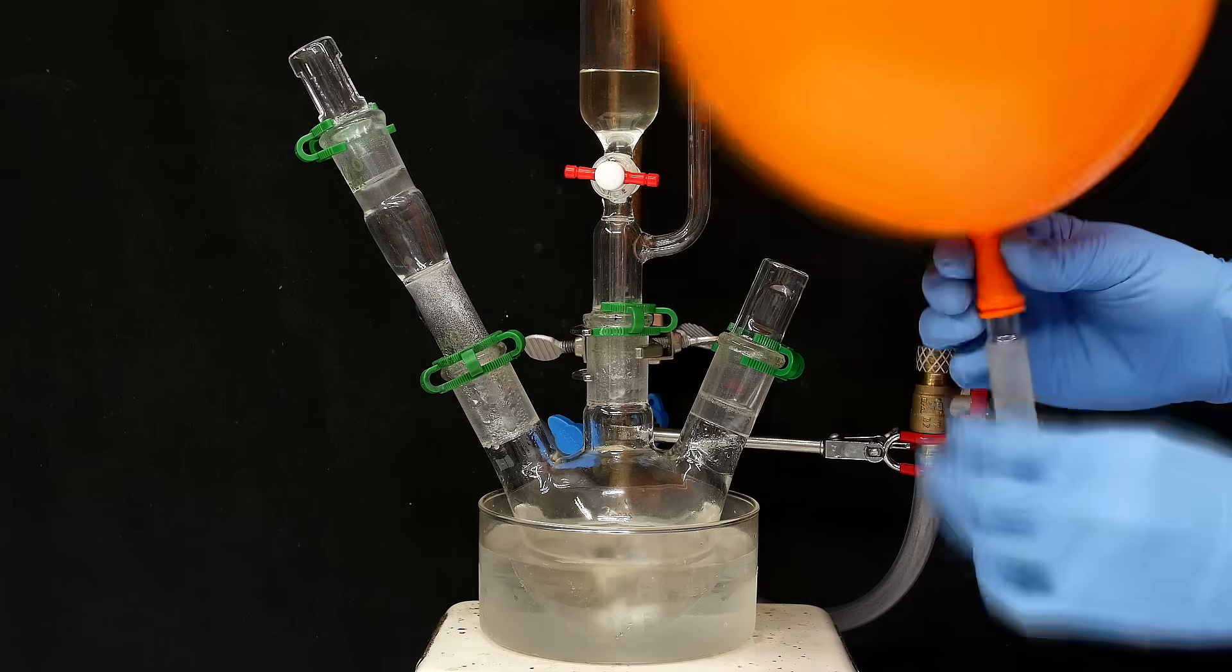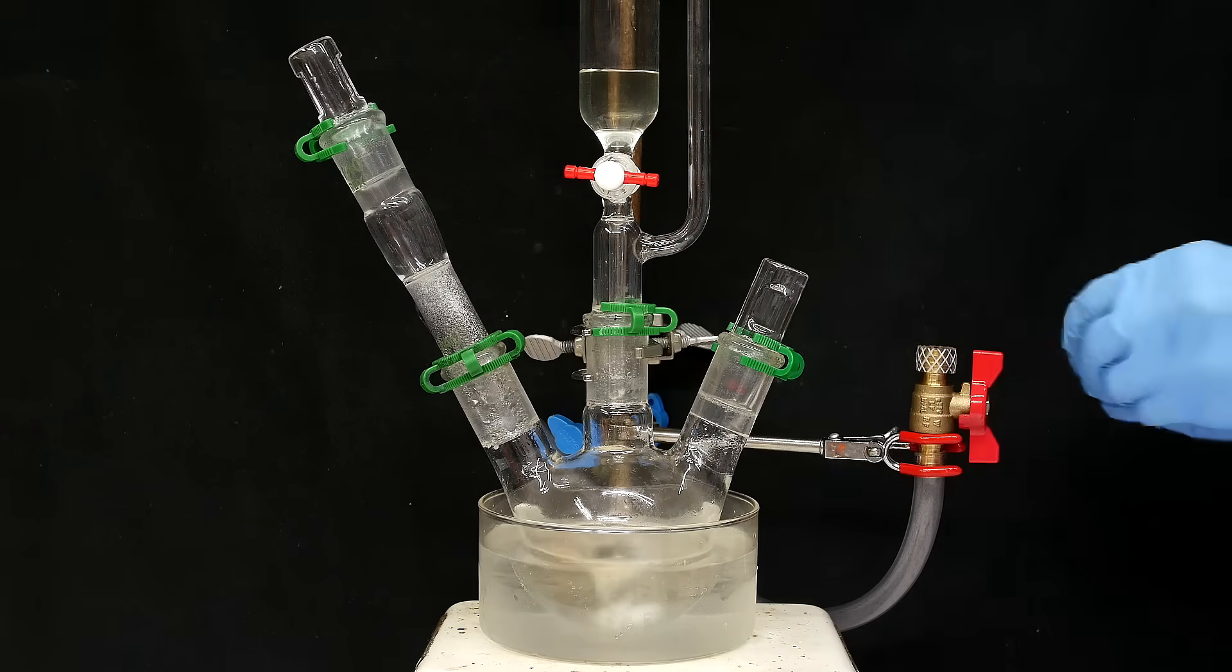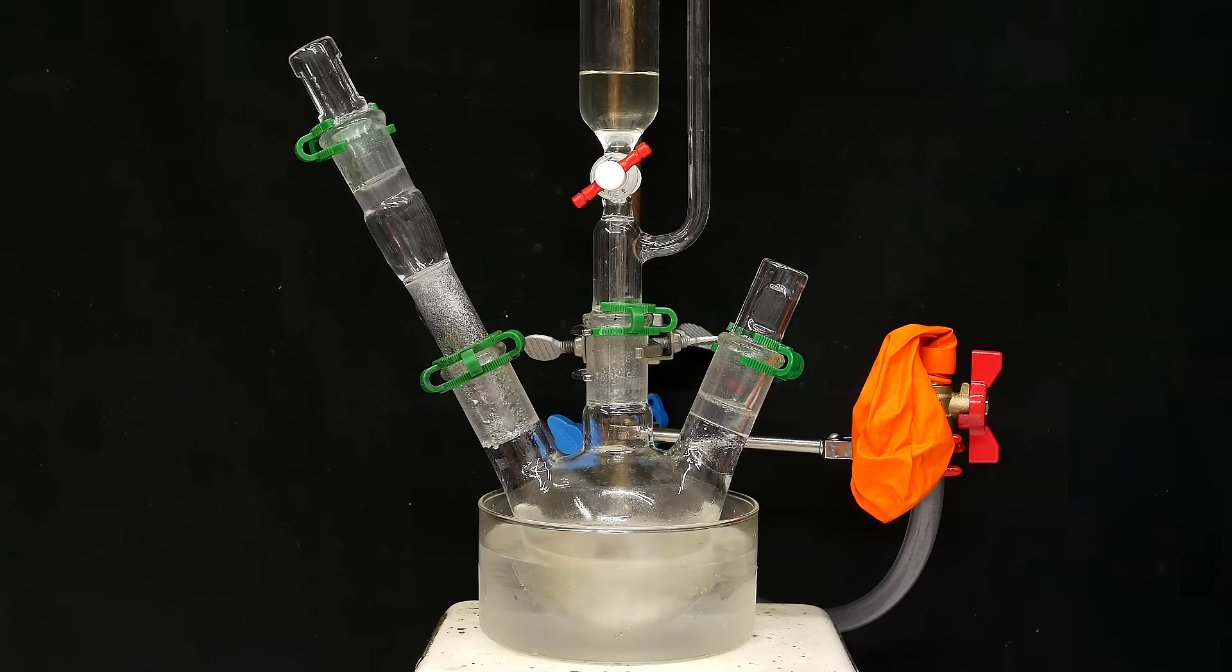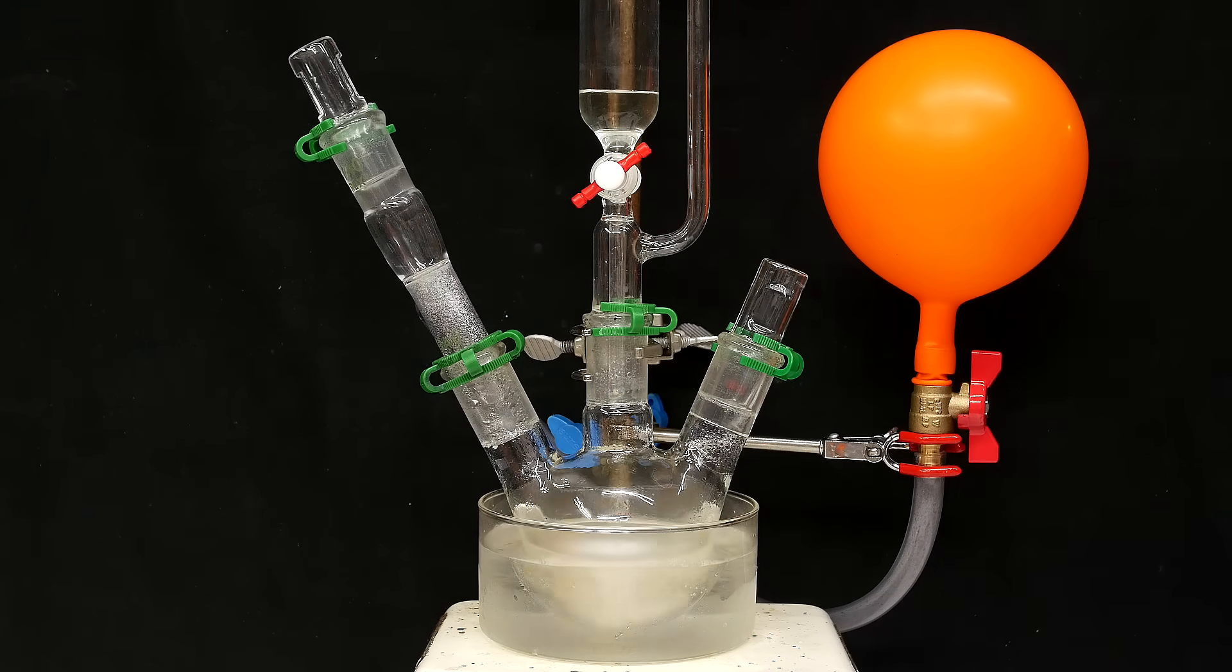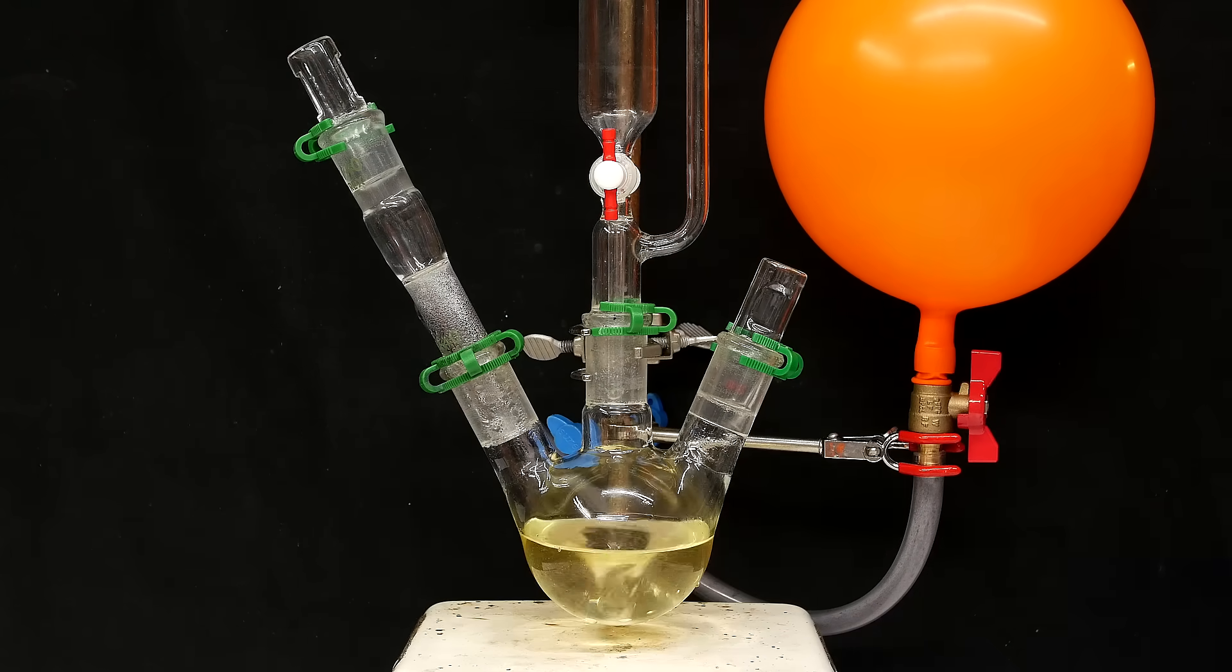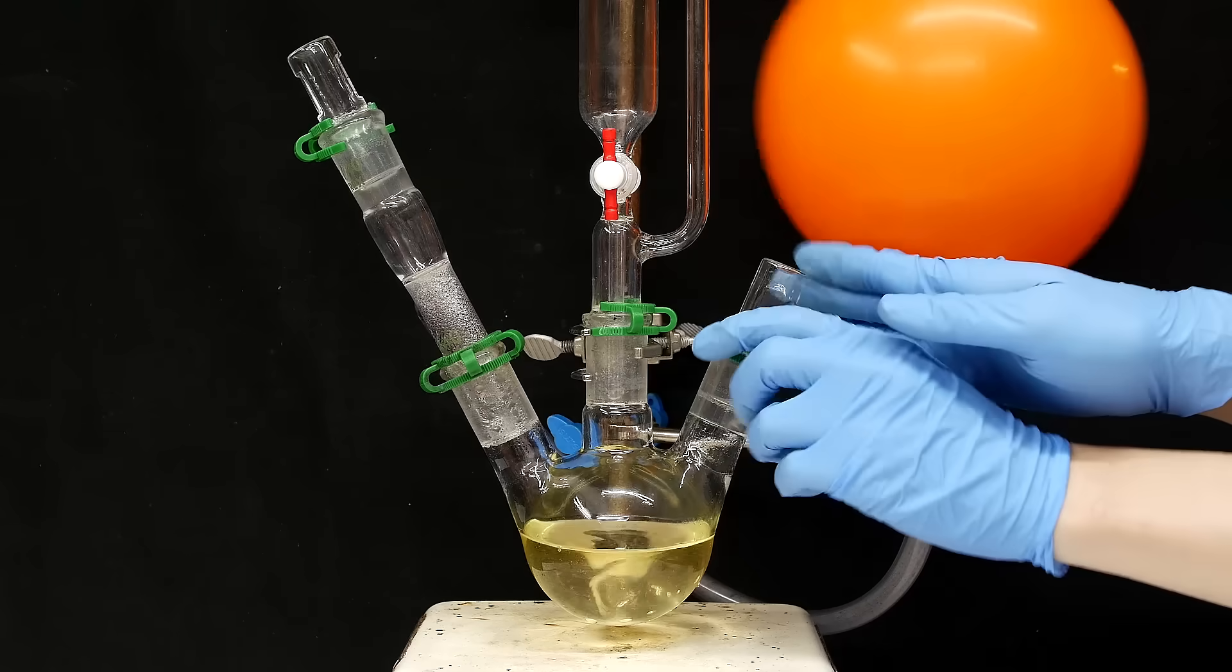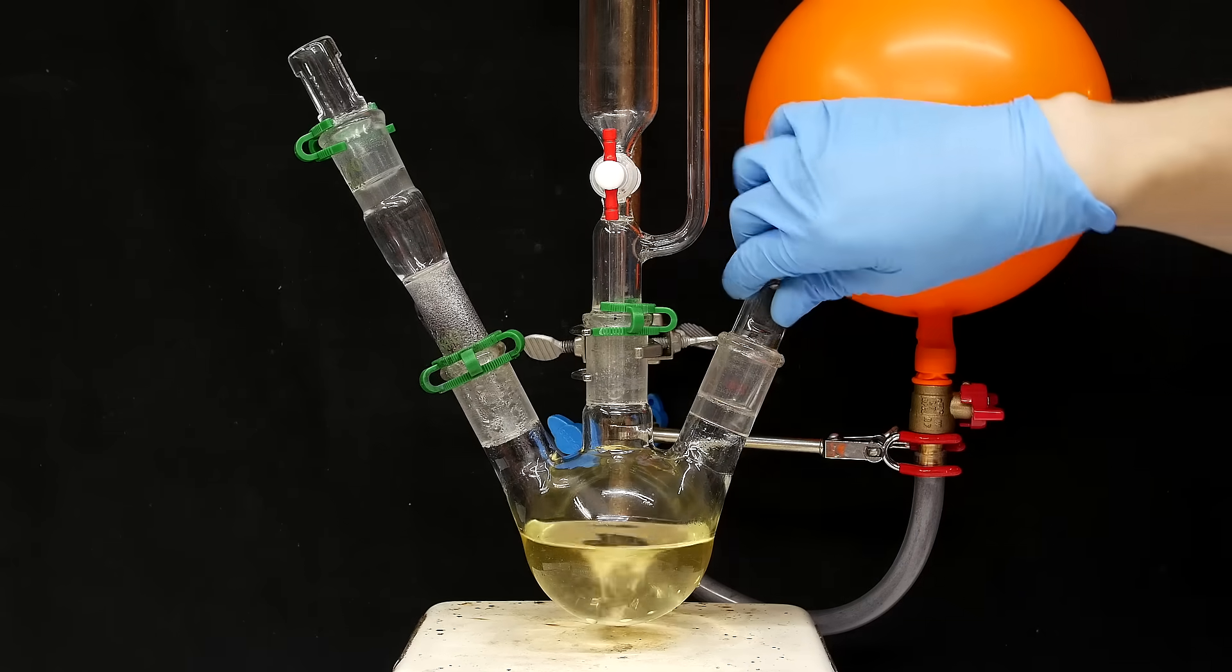When it gets to a decent size, I take it off, temporarily seal it, and add a fresh balloon. Then, I just continue the addition of the nitrite until it runs out. When this one is done, I just close the valve to seal it, and I take off a stopper to make sure that no pressure builds up.